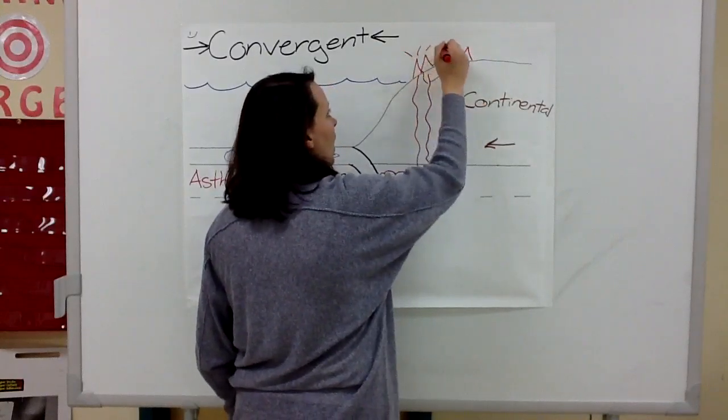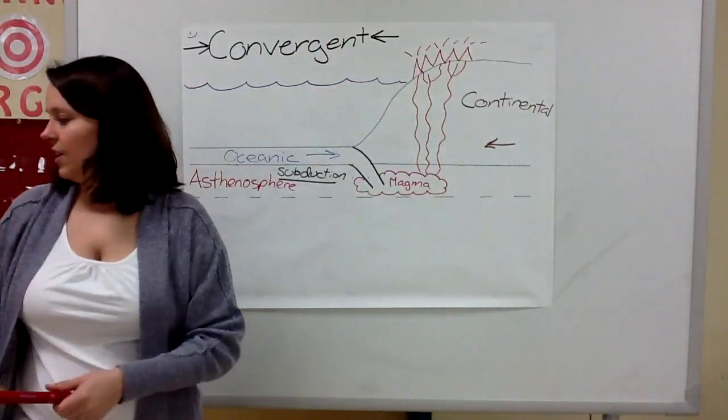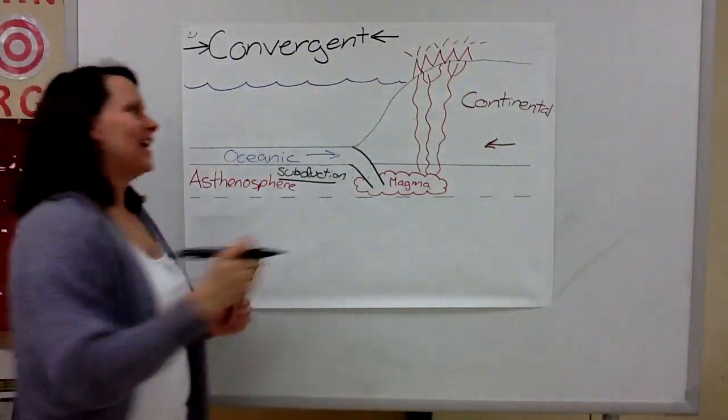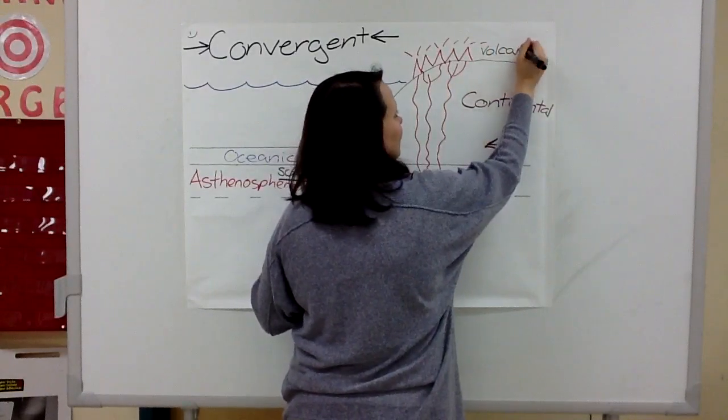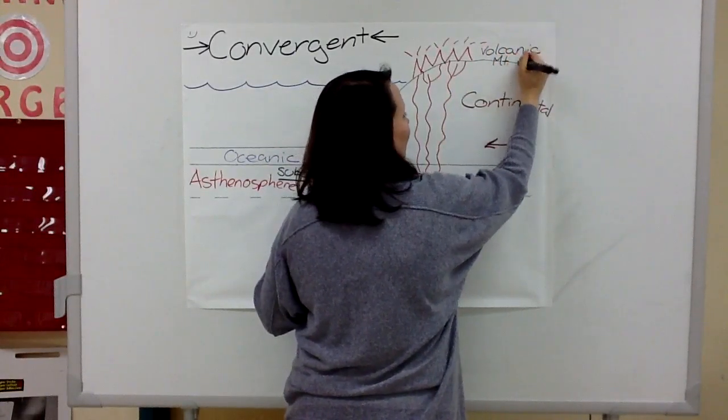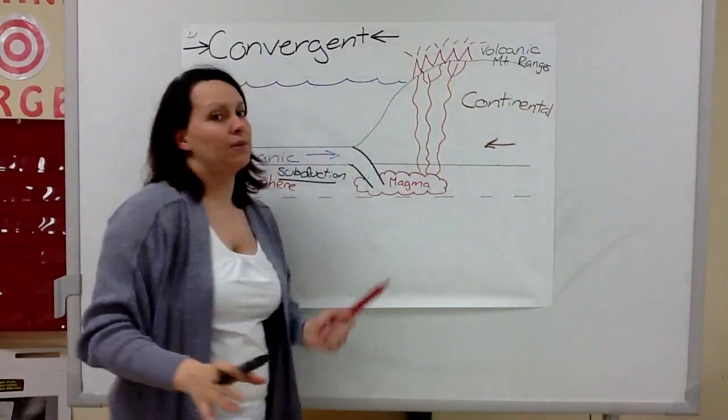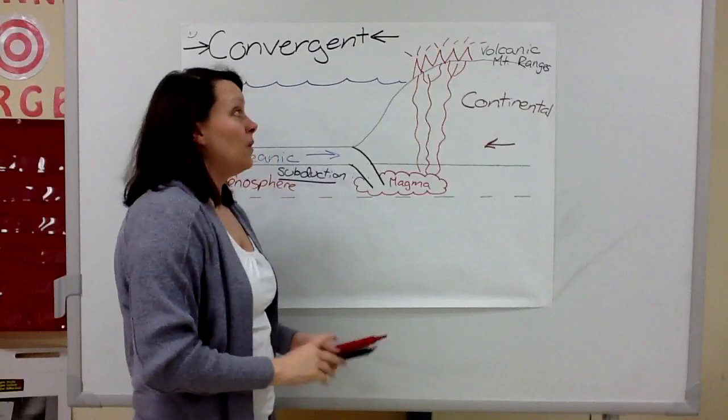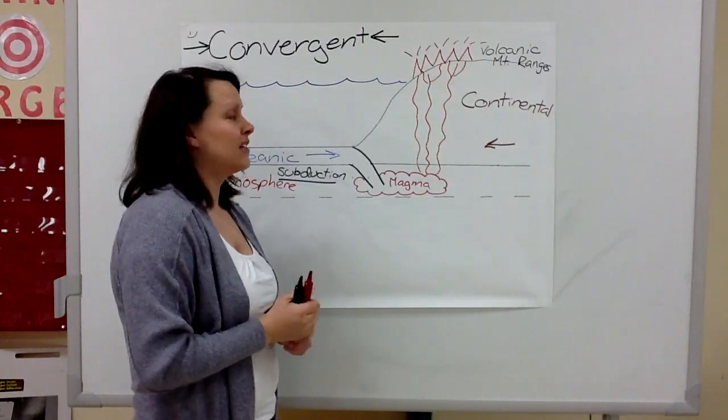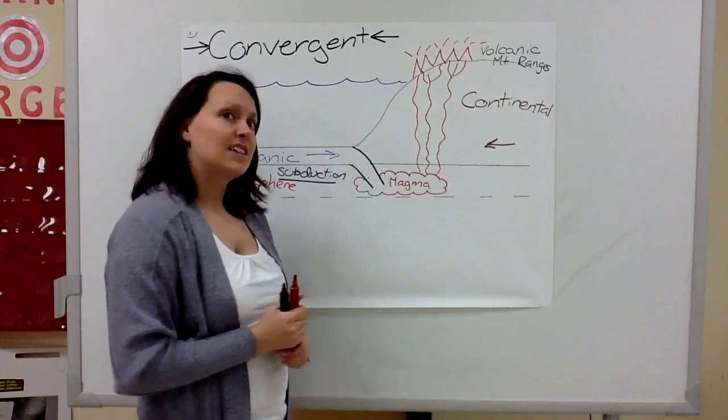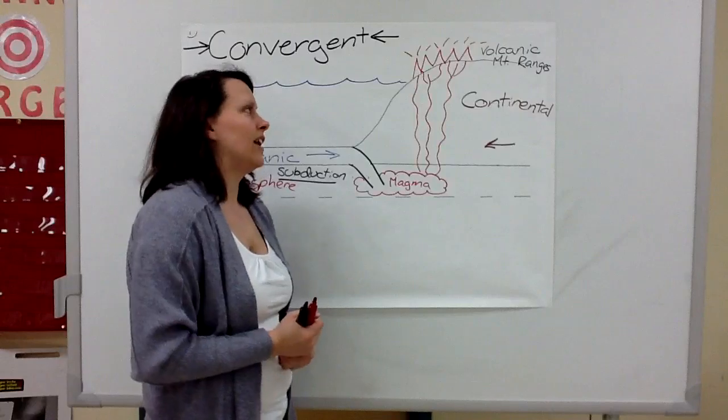Volcanic mountain ranges. We have volcanic mountain ranges all over the earth. We find them in the Andes down in South America, the Cascadia mountain range here in America, and several others that I just can't think of right now.